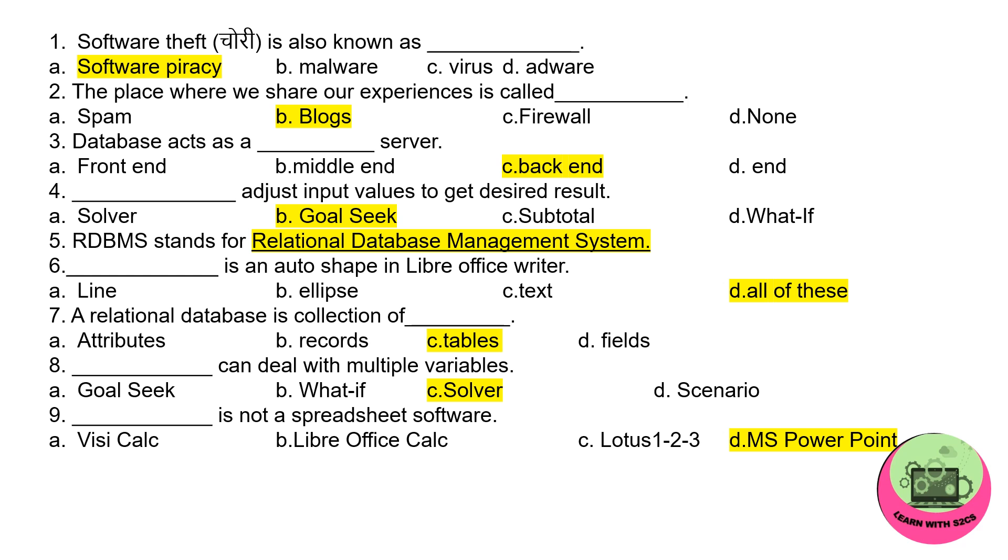Second one: the place where we share our experiences is called a blog. Database acts as a backend. Dash adjusts input values to get desired result. Now this is from the chapter e-spreadsheet, so the answer would be Goal Seek.